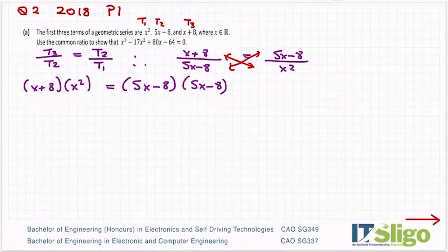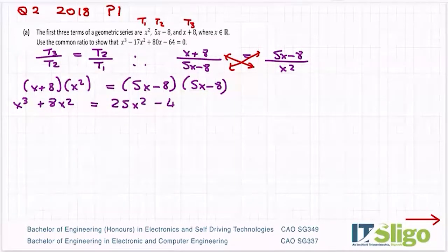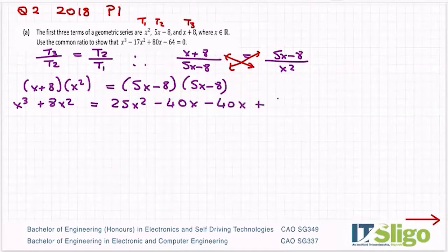So x times x squared is x cubed. 8 times x squared is 8x squared. 5x times 5x is 25x squared. 5x times minus 8 is minus 40x. Minus 8 times 5x is minus 40x, and minus 8 times minus 8 is plus 64.